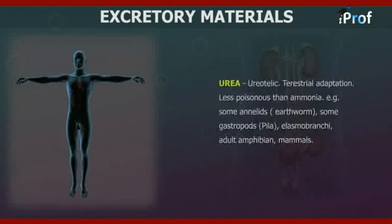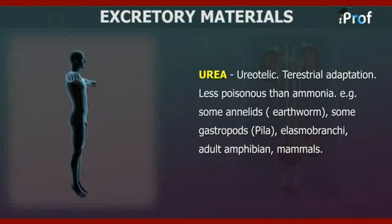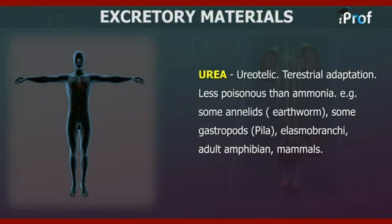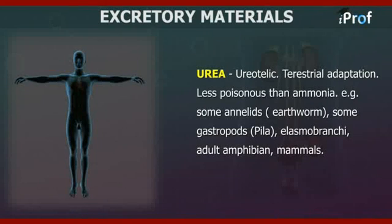Another excretory material is urea. Those animals that eliminate urea are called ureotelic animals. It is a terrestrial adaptation and urea is less poisonous than ammonia. For example, some annelids like Earthworm, and some gastropods like Pila.